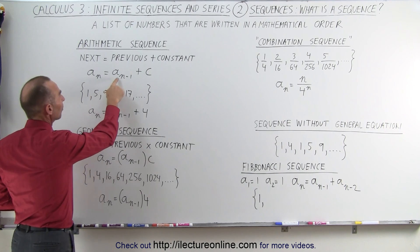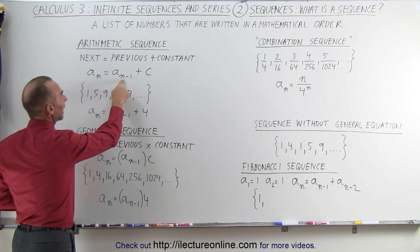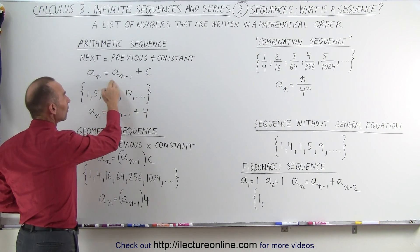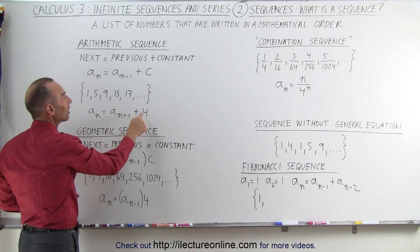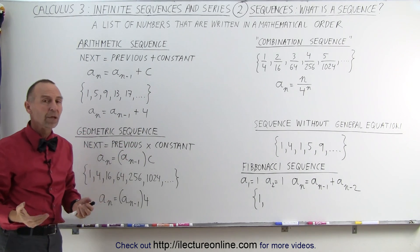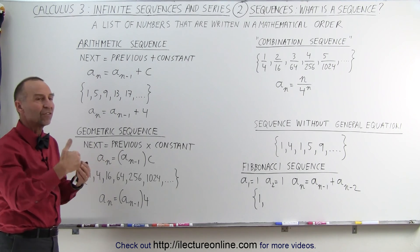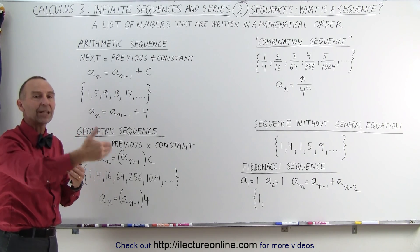The nth number is the previous number, a sub n minus 1, which means the previous number plus a given constant. In this case, the given constant is the number 4. So if the next number is simply a constant bigger than the previous number, we call that an arithmetic sequence.